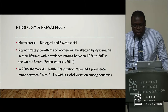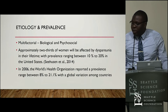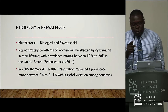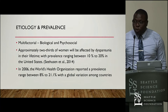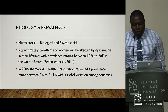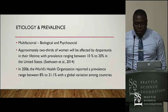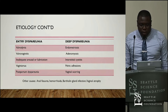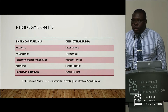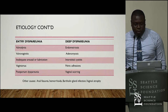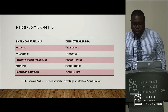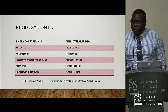The etiology of dyspareunia is multifactorial — a lot of factors can play a role, which is another reason why you want to consider the whole patient. There are biological factors as well as psychosocial factors. For entry dyspareunia the causes include vulvodynia, vulvovaginitis, vaginismus, and so on. For deep dyspareunia, endometriosis is the number one cause, along with adenomyosis, vaginal stenosis after radiation, pelvic adhesions, and so forth.